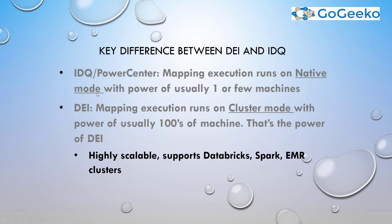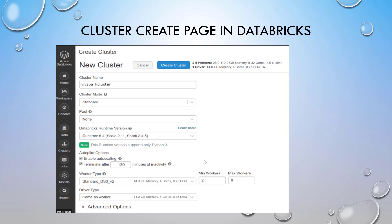This is the key cost difference: with PowerCenter your machine is always on and you're paying 24/7. With DEI, when your machines are not in use and you're not executing your mappings, those can shut down and you're not charged — you're only charged when you're actually using the compute of those worker nodes. Worker nodes are usually a cluster like Databricks, Spark, EMR clusters, or Hadoop clusters.